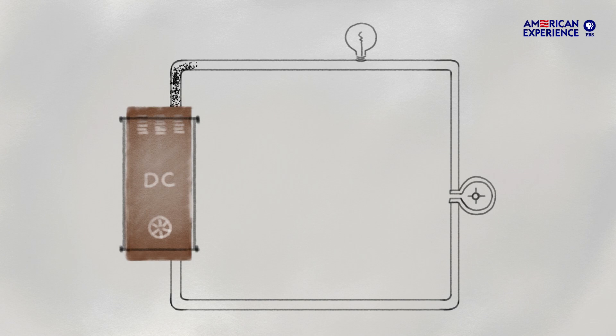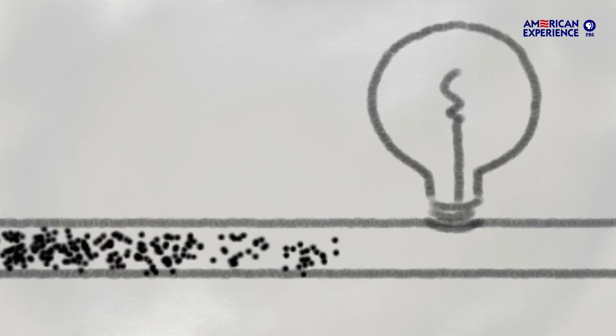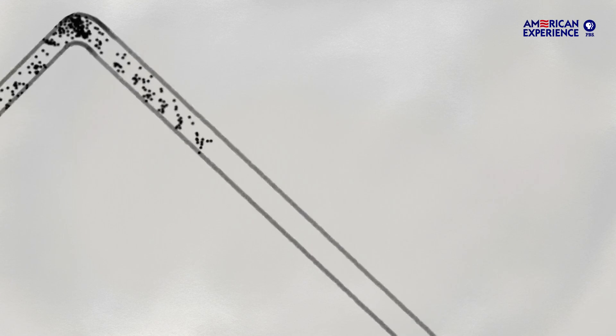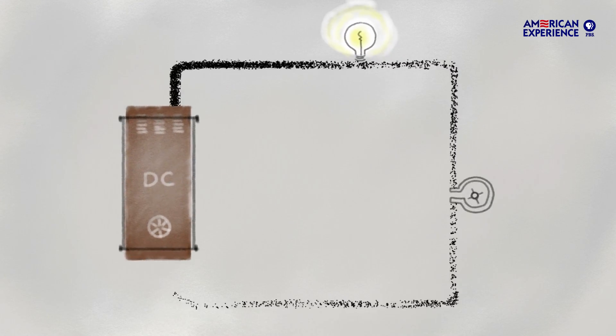With direct current, a generator produces electricity, a stream of electrons that flows along a wire to a light bulb or a motor, and then returns to the generator in one long continuous loop.